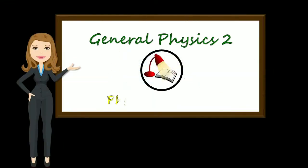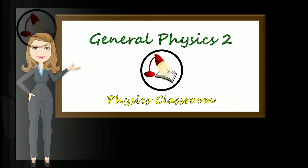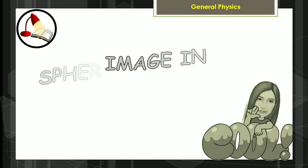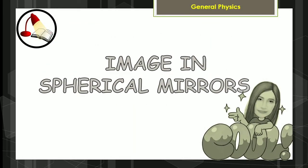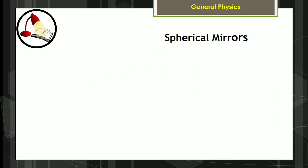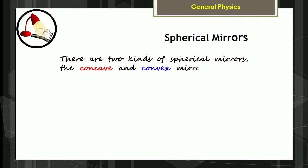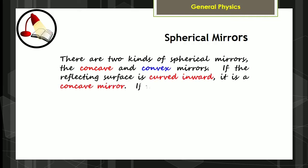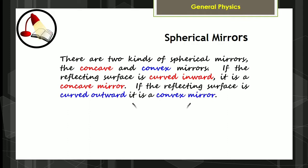General Physics 2 is brought to you by Physics Classroom. For this week's lesson, let us explore how images are formed in spherical mirrors. There are two kinds of spherical mirrors: the concave and convex mirrors. If the reflecting surface is curved inward, it is a concave mirror. If the reflecting surface is curved outward, it is a convex mirror.